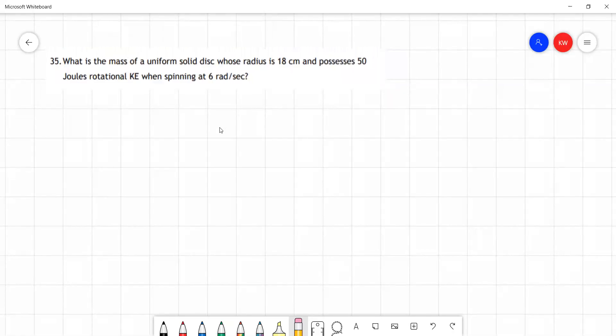This is question 35 from the LO3 tutorial questions for engineering dynamics. In this question we're asked to find the mass of a uniform solid disk. We're given the radius and the rotational energy and the angular velocity of the disk in question.